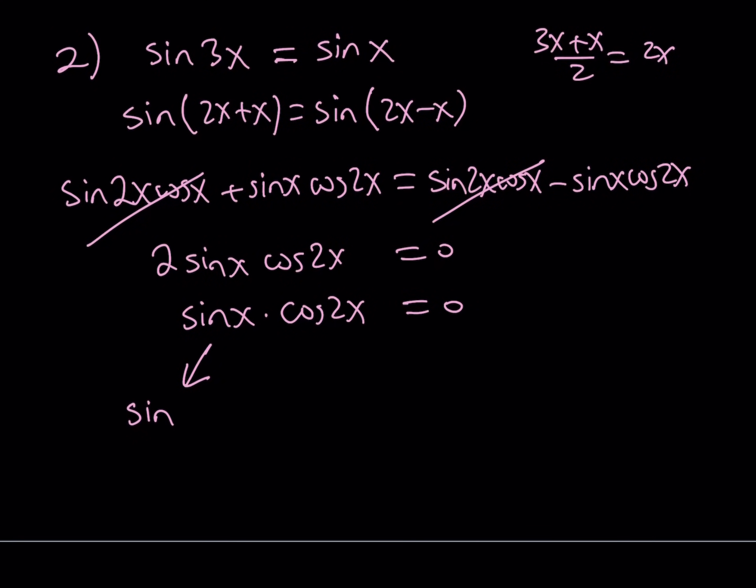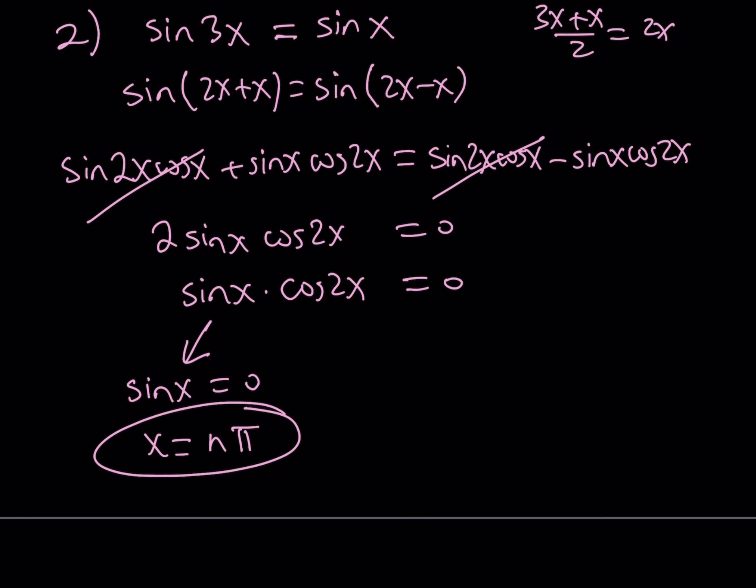If sine x is equal to 0, as you know from before, x can be written as n pi, where n pi is a multiple of pi, basically.